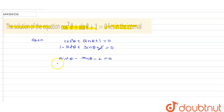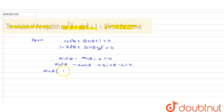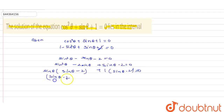Factorize the equation: sin²θ − 2sinθ + sinθ − 2 = 0. Taking common factors: sinθ(sinθ − 2) + 1(sinθ − 2) = 0. So the factors of the equation are (sinθ − 2)(sinθ + 1) = 0.